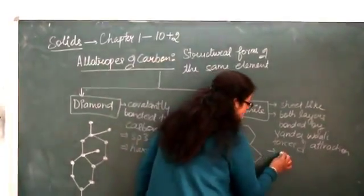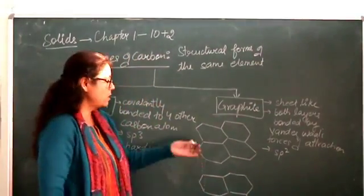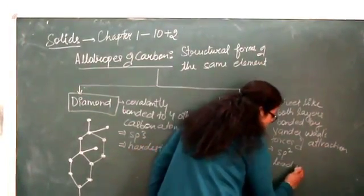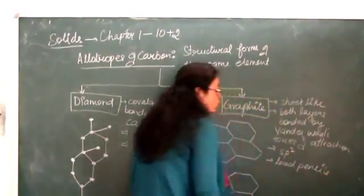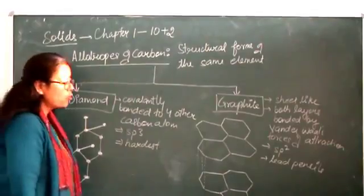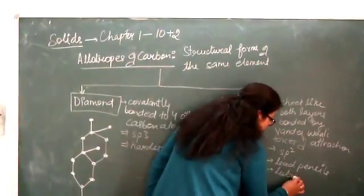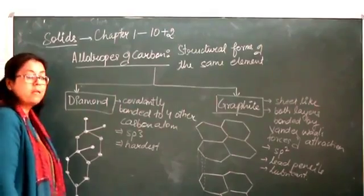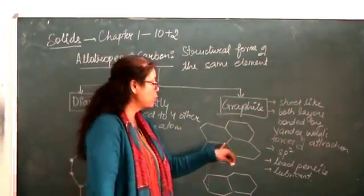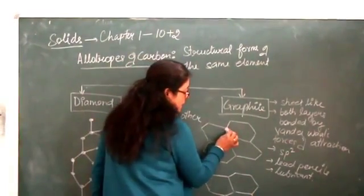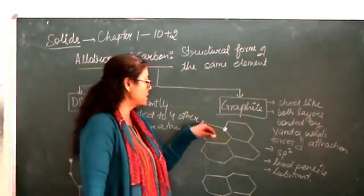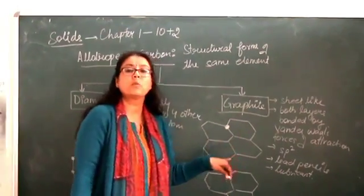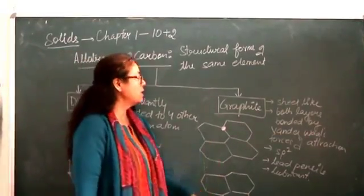The hybridization in graphite is SP2. Because of its slipping nature, it is used in lead pencils and also as a lubricant, as it is very soft. Graphite is also a good conductor of electricity because each carbon atom is connected to only three other carbon atoms, leaving one electron free — and this free electron is responsible for the conduction of electricity in graphite.